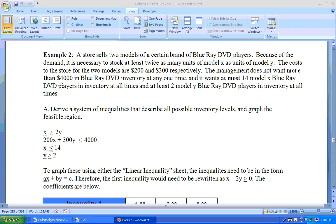it is necessary to stock at least twice as many units of Model X as units of Model Y. The costs to the store for the two models are $200 and $300 respectively. The management does not want more than $4,000 in Blu-ray DVD inventory at any one time, and it wants at most 14 Model X Blu-ray DVD players in inventory at all times and at least two Model Y Blu-ray DVD players in inventory at all times.